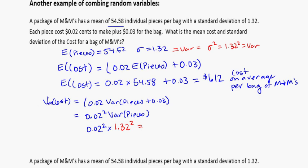And to get back to the standard deviation I'm going to end up square rooting that in the end anyways, so I might just do this all in one step. The standard deviation will be equal to the square root of the variance which will be equal to 0.02 squared times 1.32 squared, and that turns out to be 0.026.